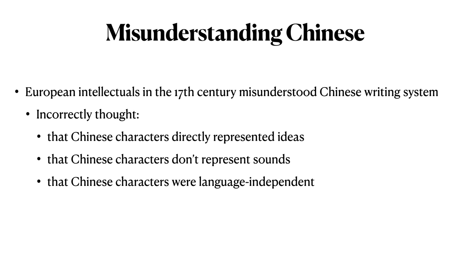The next video examines this search for universal language in more detail. That video was recorded for a different class, History of Machine Translation. So, to recap, European intellectuals in the 17th century fundamentally misunderstood the Chinese writing system. They incorrectly thought that Chinese characters directly represent ideas, that Chinese characters don't represent sounds, and that Chinese characters are language independent.